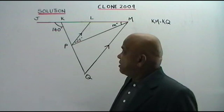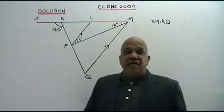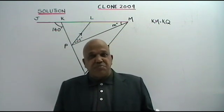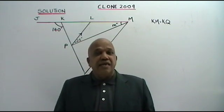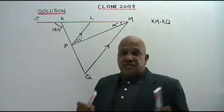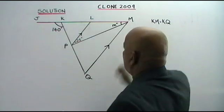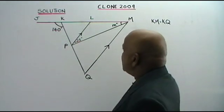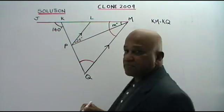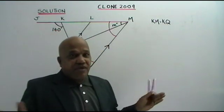Welcome to the topic of Lines and Angles PMR Paper 1. Lines and Angles is the first topic in Form 3. Before we start doing any sums on this topic, we must be familiar with all the types of angles and angle theorems. Here I have a clone question based on the year 2009. You are given that KM is equal to KQ, which means it is an isosceles triangle. So the base angles are equal, and we are supposed to find the value of M. We go step by step.